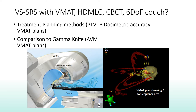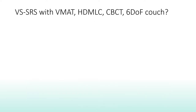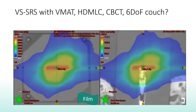Finally, we evaluated the dosimetric accuracy of our LINAC-based volume staging by delivering our PTV VMAT plans to radiochromic film and a diamond detector placed at the junction between the two stages.